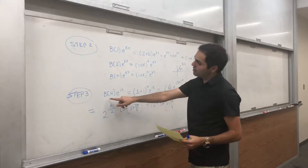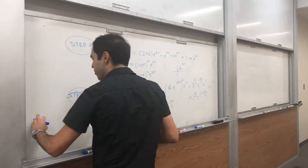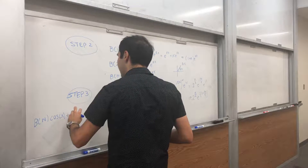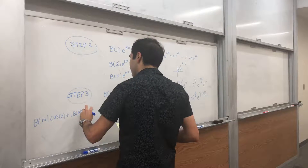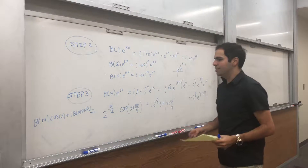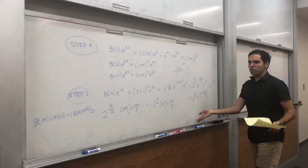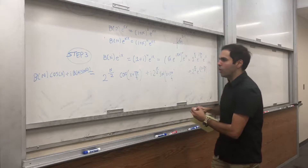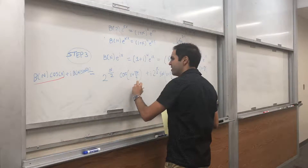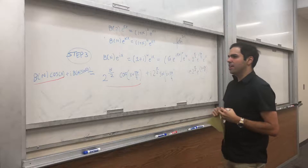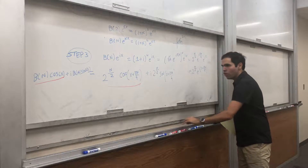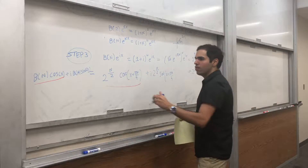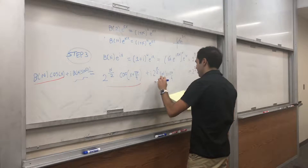Since e^{ix} = cos(x) + i*sin(x), we also have B_n(e^{ix}) = B_n(cos x) + i * B_n(sin x). Comparing both sides, we get that the binomial derivative of cosine shifts it by multiples of pi/4 and dilates it by 2^{n/2}, and similarly with sine.